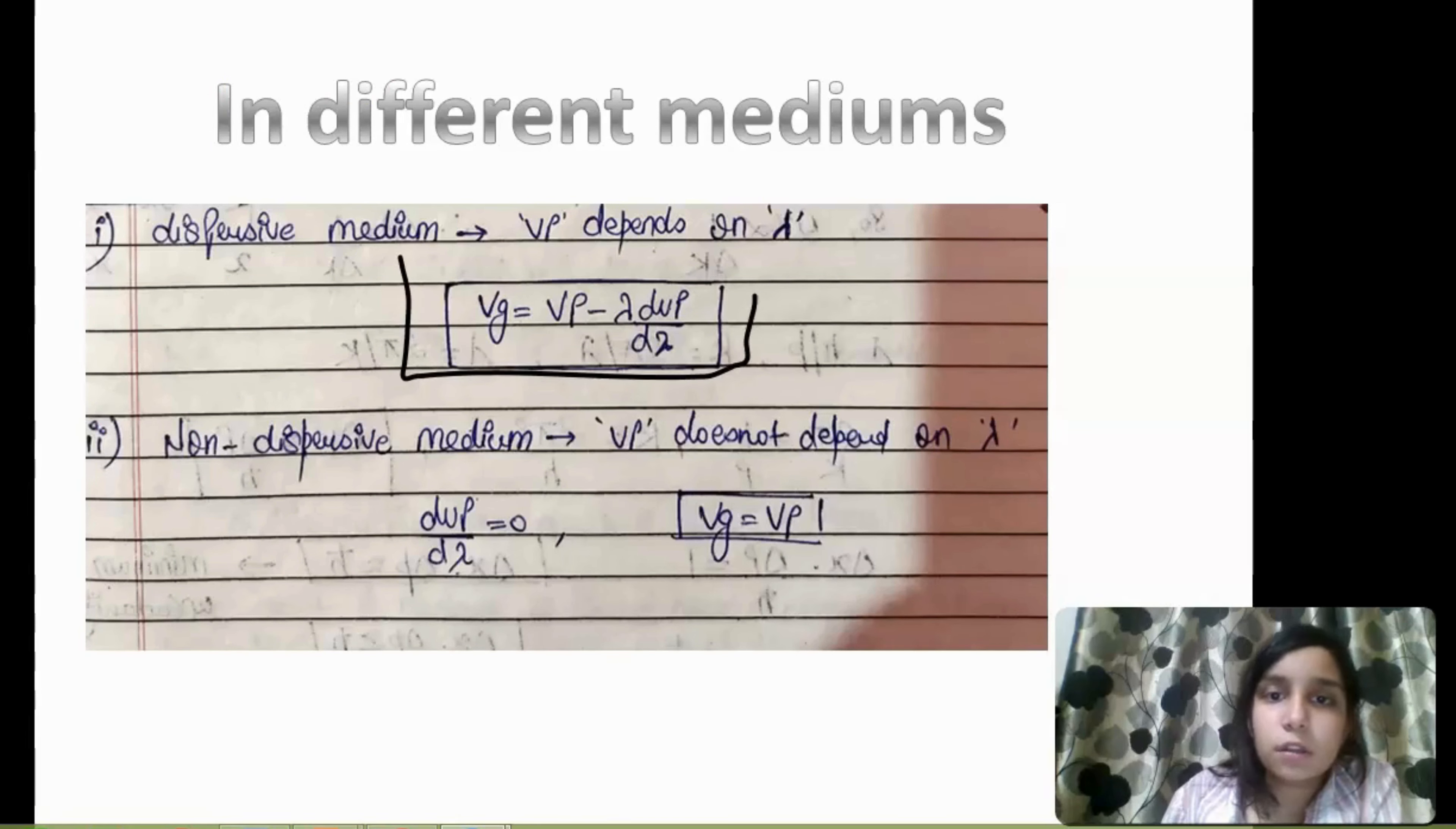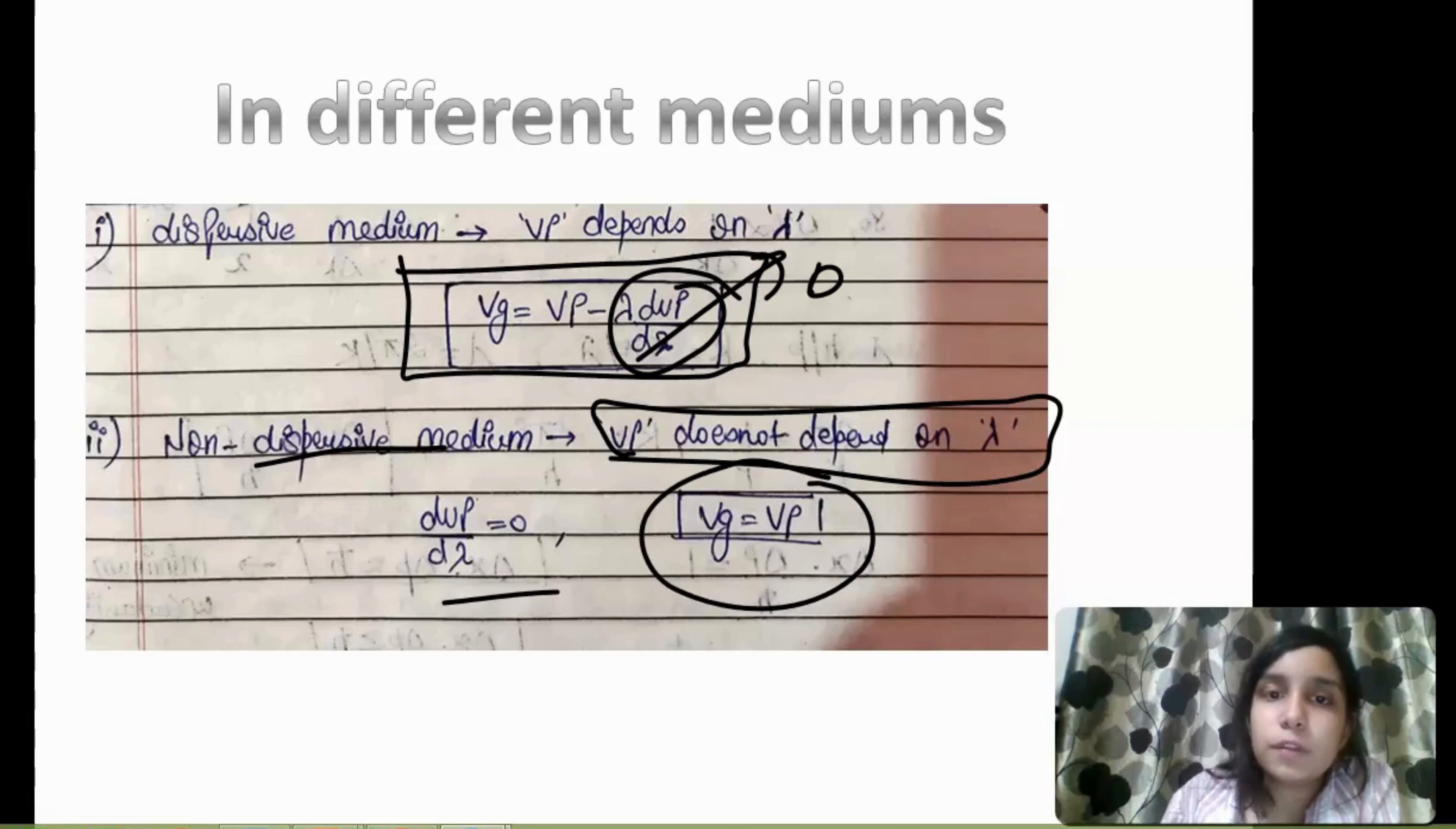In non-dispersive medium, simply, we know that the Vp will not depend on lambda. Means, which is equal to this term, it will be zero. So, if this term is zero, then it will be simple. This is the second term zero. So, Vg is equal to Vp. This is for non-dispersive medium. So, this will be in dispersive medium and non-dispersive medium. Clear?